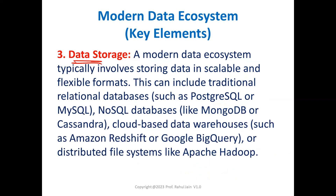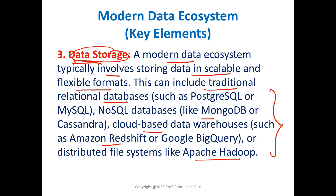The third key element is data storage. A modern data ecosystem typically involves storing data in a scalable and flexible format. This can include traditional relational databases like RDBMS, NoSQL databases like MongoDB, cloud-based databases like Google BigQuery, or distributed file systems like Apache Hadoop. At the time of need, you can access them with simple commands.